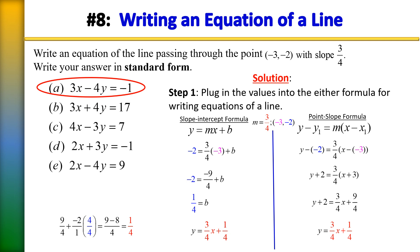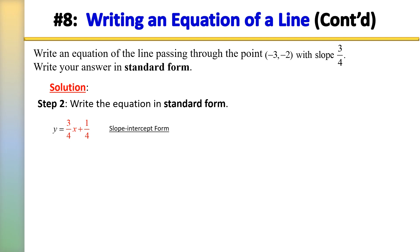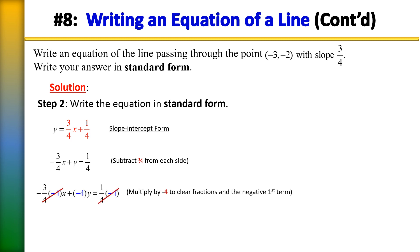Now rewriting in standard form: subtract 3 fourths x from each side. The problem is the x coefficient is negative, and in standard form this value cannot be negative or a fraction. So multiply everything by negative 4 to clear the fractions and the negative. We wind up with 3x minus 4y equals negative 1 — that is our equation in standard form.